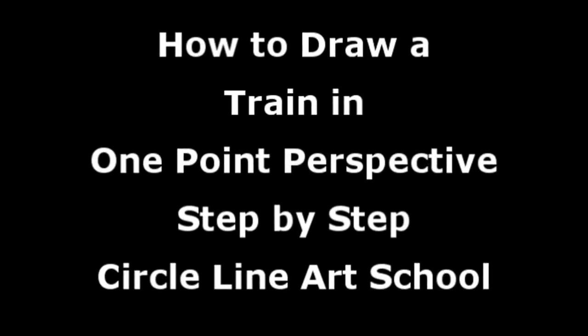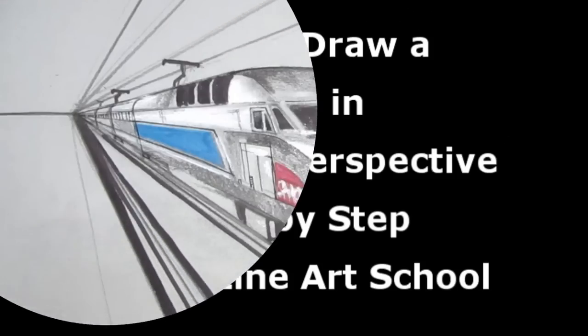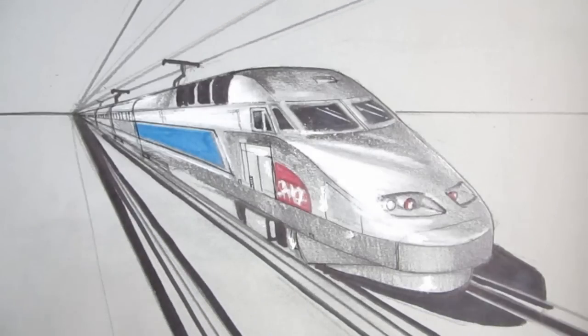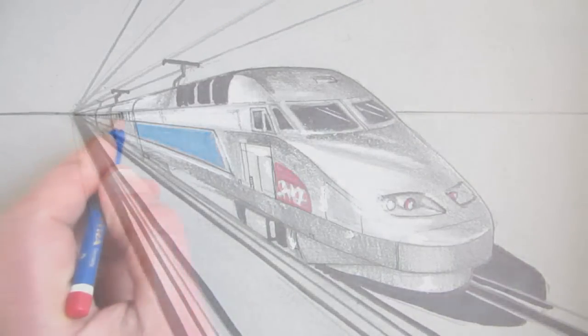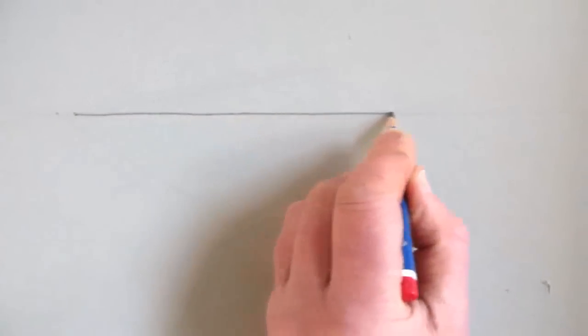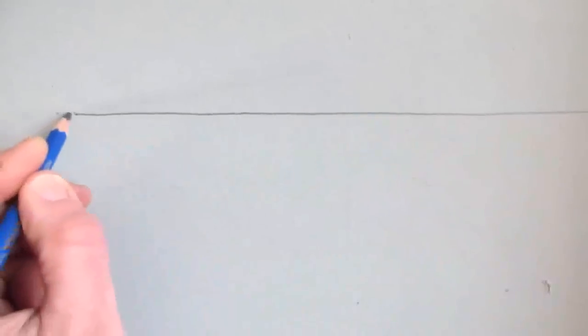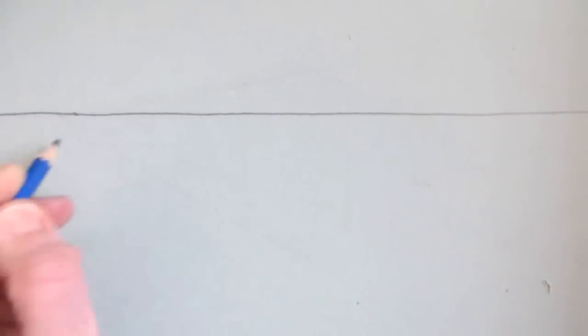Hello and welcome to my new video, how to draw a train in one point perspective step by step. The first step is to draw the horizon and then a dot or vanishing point on the left hand side of your page.